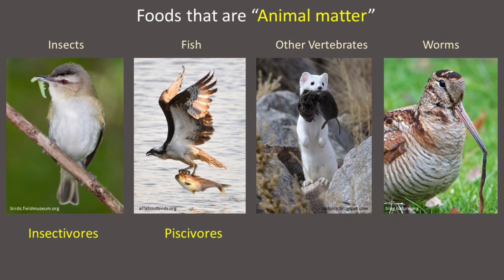Wildlife that eat primarily fish are called piscivores. Ospreys, bald eagles, loons, mergansers, and belted kingfishers are all examples of piscivores.